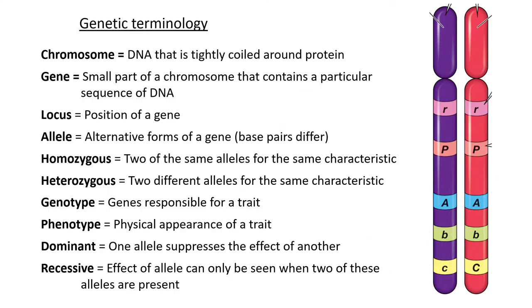There are a couple of terms you must be familiar with in genetic terminology. The first is a chromosome - the DNA is inside a chromosome. A chromosome itself is DNA that is tightly coiled or wound around certain types of proteins, forming structures like the ones shown. Usually all individuals, even humans, inherit one chromosome from their dad and another from their mother, which is why the two are shown in different colors but the same length. These two pair up and carry the same genes.